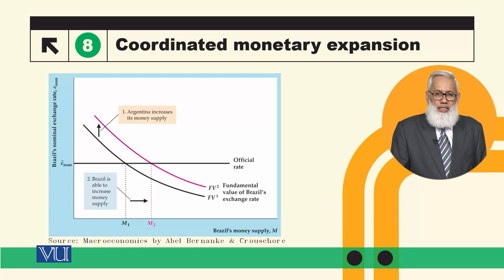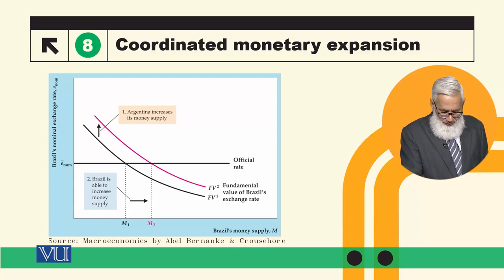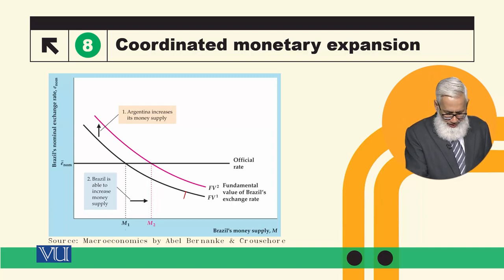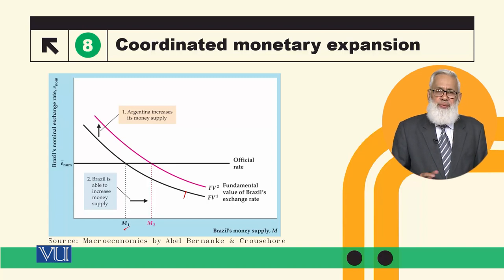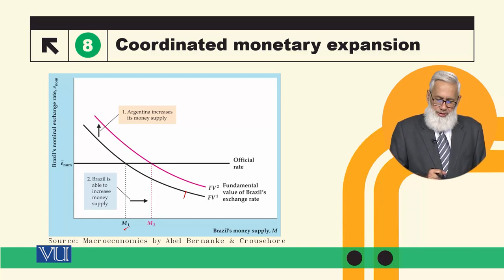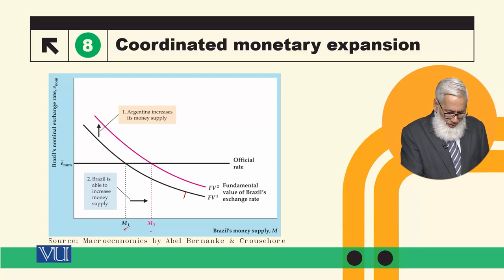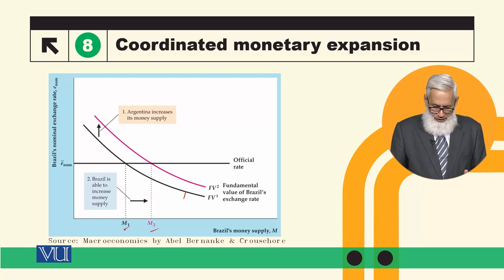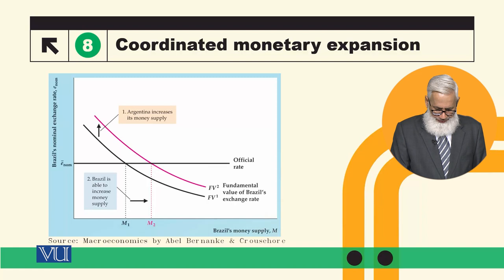When the other country also uses monetary expansion, the fundamental value curve shifts upward. If previously the fundamental value and official rate were equal at money supply M1, with this coordinated effort they become equal at a higher level M2 — meaning money supply can be increased to overcome recession.